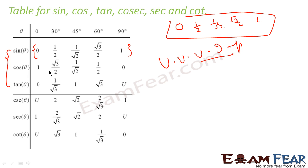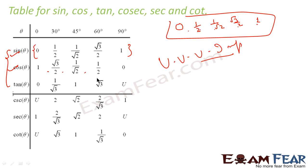For cos, it is just the reverse sequence: 1, root 3 by 2, 1 by root 2, 1 by 2, and 0. So if you remember this, you can manage with cos also. For tan, what you do? Tan is nothing but sin by cos. So you get: 0 by 1 = 0; (1/2) by (root 3/2) = 1 by root 3; (1/root 2) by (1/root 2) = 1; (root 3/2) by (1/2) = root 3; and 1 by 0 is undefined. So you got tan also.